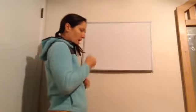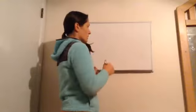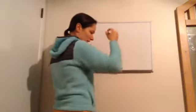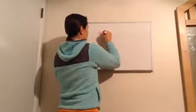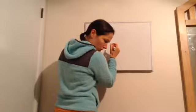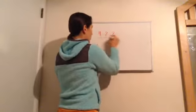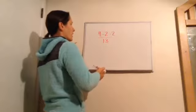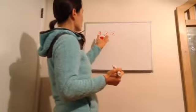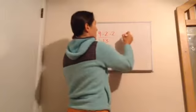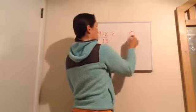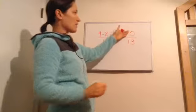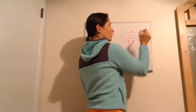We're going to talk about division by zero. For example, 4 minus 2 minus 2 over 13: 4 take away 2 is 2, 2 take away 2 is 0. So the answer would be 0 over 13. This is fine to have 0 in the numerator — it would just equal 0.